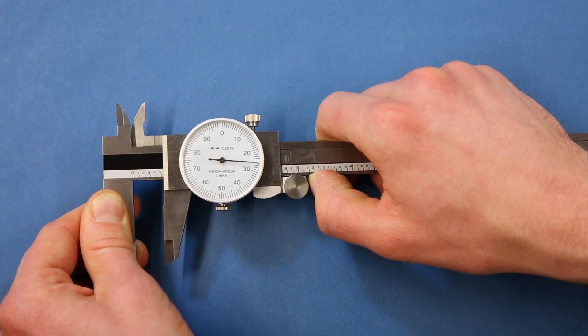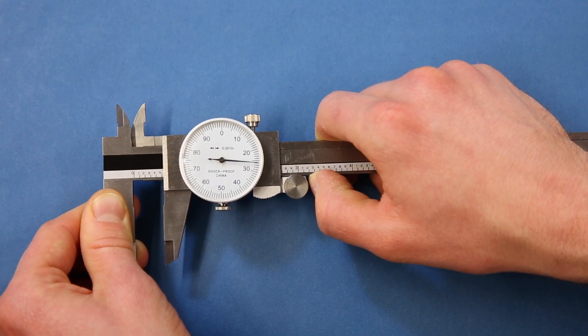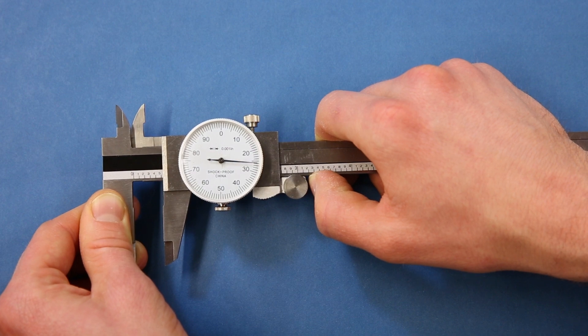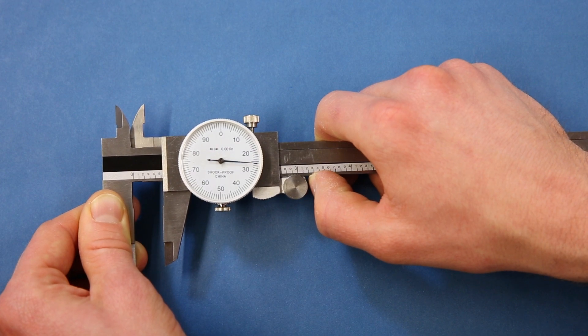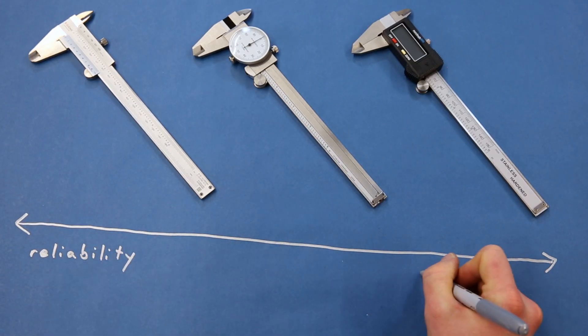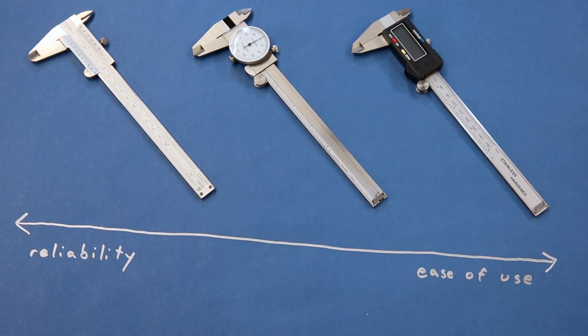This can be helpful if you need to move the calipers away from the object to read the scale, or if you want to compare the dimensions of two different objects without writing down the measurements. You'll generally find slide calipers in one of three types: vernier, dial, and digital.